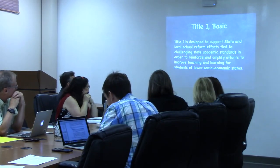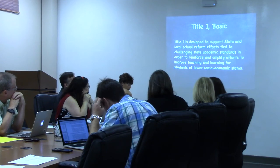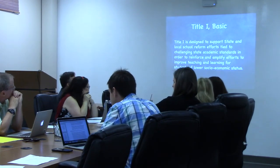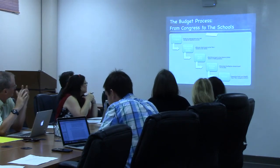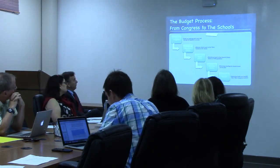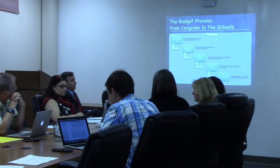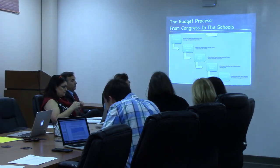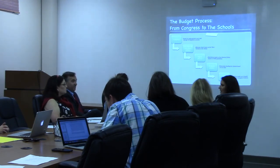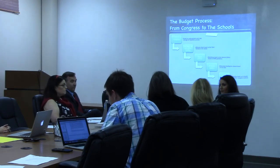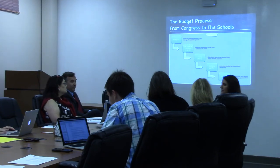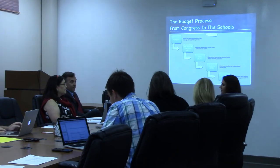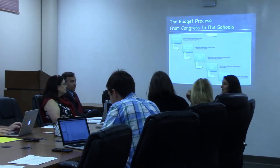Title I is designed to support state and local school reform efforts to meet challenging academic standards and reinforce and amplify efforts in teaching and learning. In terms of the budget process, every year Congress appropriates funds through the legislative process, and those funds go through the US Department of Education, which allocates funds to the states based on the Title I formula. Then it goes to the states. Let me explain what situation we're in, because this is where it affects us. When we branched off from our parent district, we were originally for the first three years considered a standalone district, but the US Census data is what's used to go into the formula that the US Department of Education allocates funds to the state.